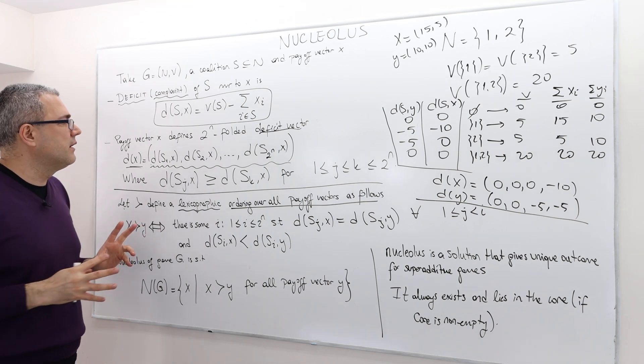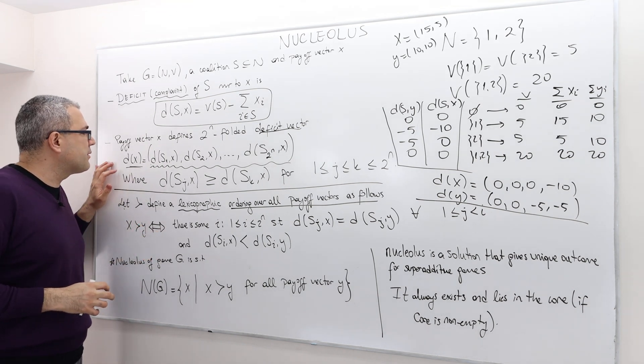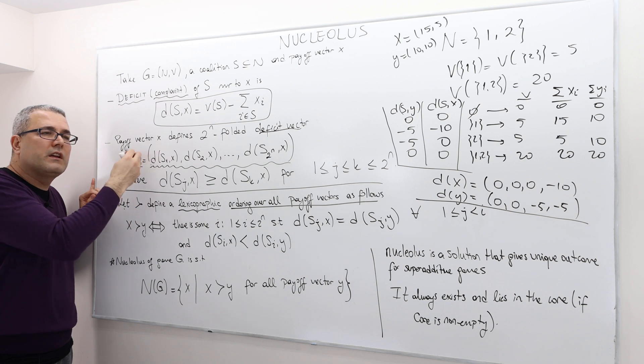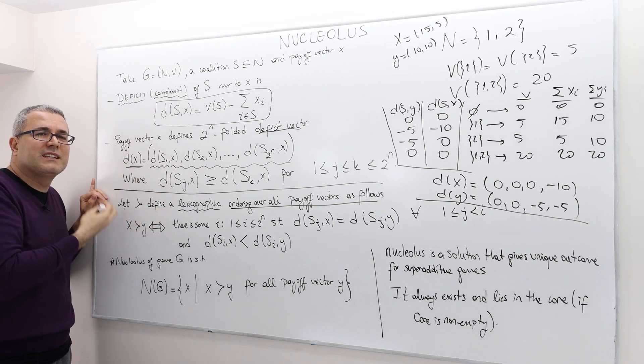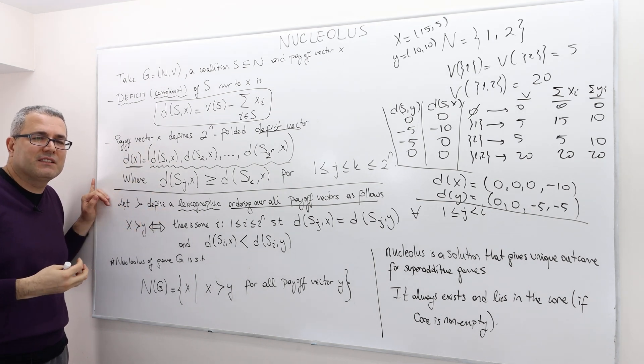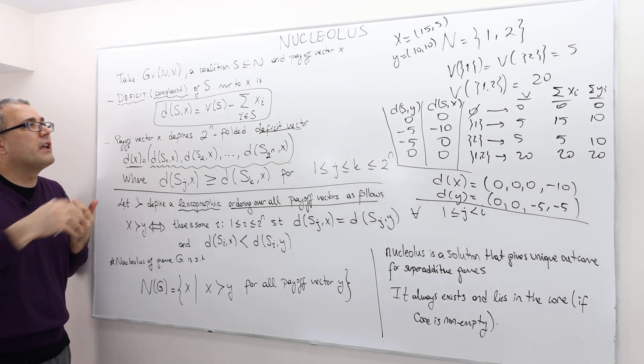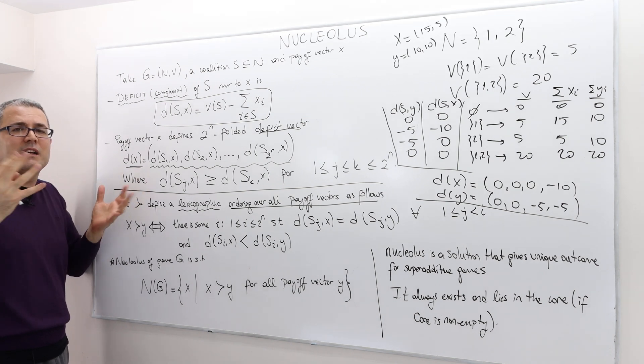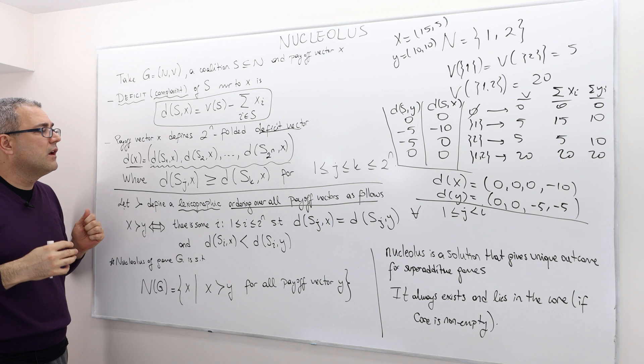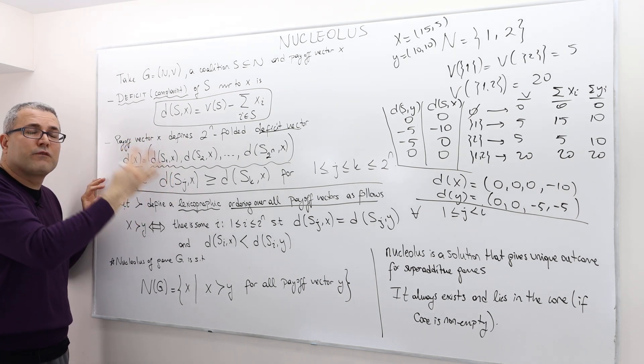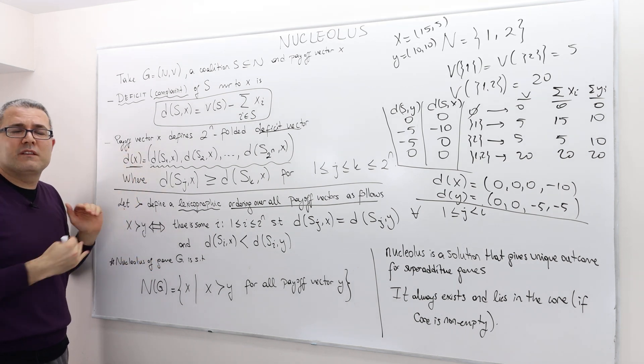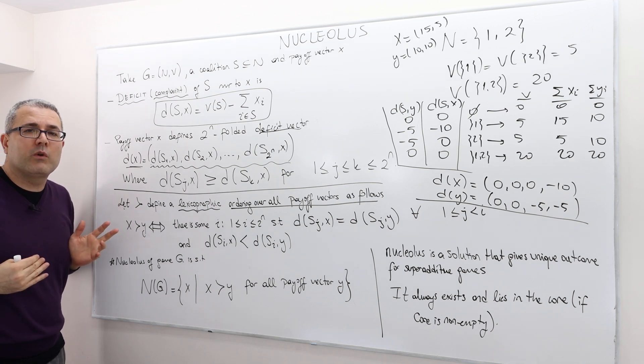But at that index i, the complaint under y is higher than complaint under x. So what are we doing here? A little bit of intuition maybe. So remember, for any payoff vector, we created an order of complaints. So these are each coalition's complaint, how much deficit they have, like I'm not happy with what I am receiving, given that what's my coalition is worth. And so that's my complaint. I am unhappy about it.